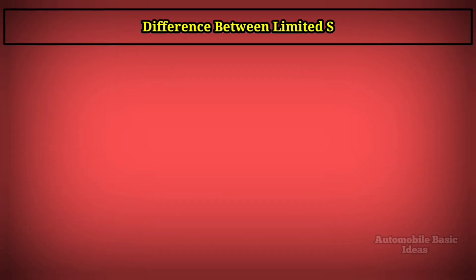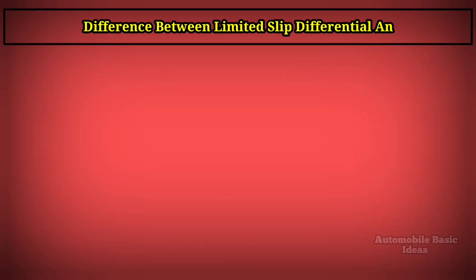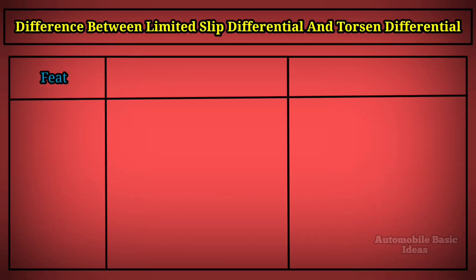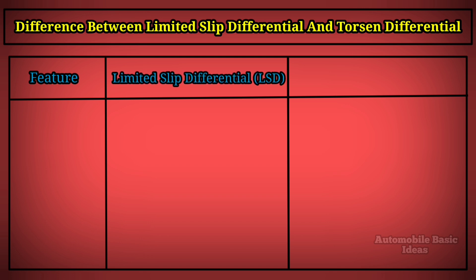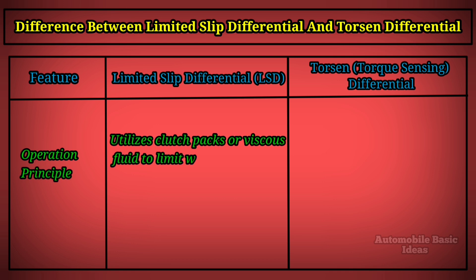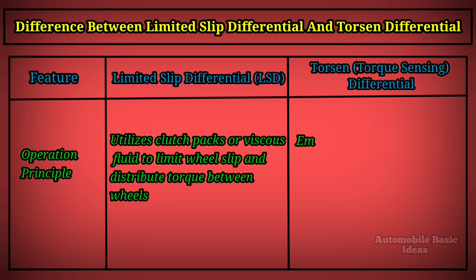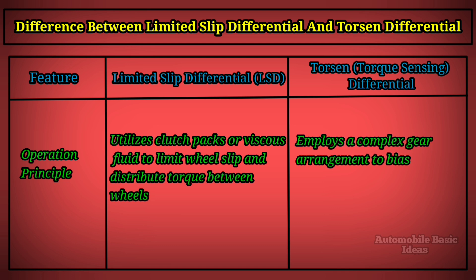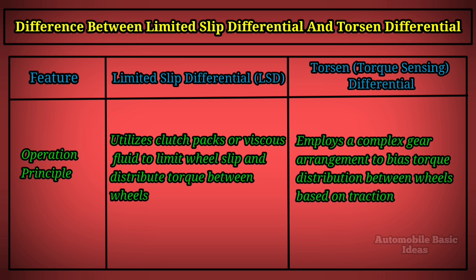Comparing limited slip differential (LSD) and torque-sensing (Torsen) differential. The limited slip differential utilizes clutch packs or viscous fluid to limit wheel slip and distribute torque between wheels. The torsen differential employs a complex gear arrangement to bias torque distribution between wheels based on traction.